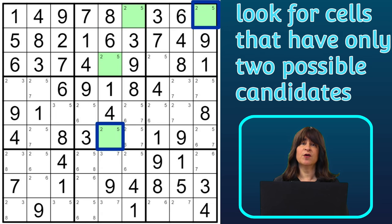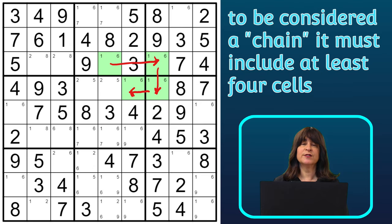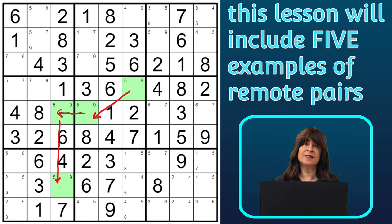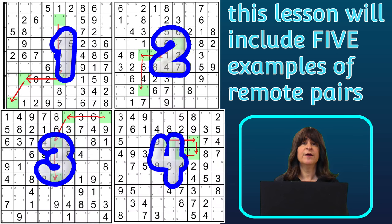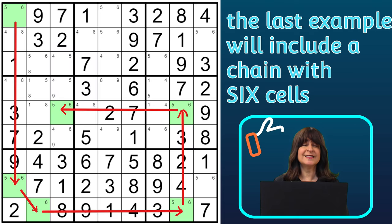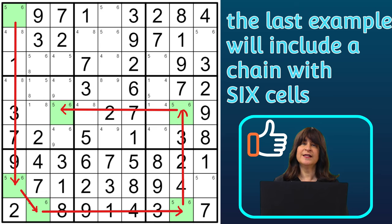With remote pair, we are looking for cells that contain a pair of candidates, meaning only two possible candidates in a cell. There is one more characteristic of remote pair, and that is that the chain has to be at least four cells. In this lesson, I'm going to show you five different examples of remote pair. The first four examples involve four cells. The last example has six cells — make sure you watch that one, it's really interesting to follow the chain.